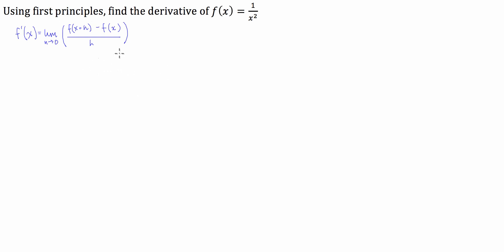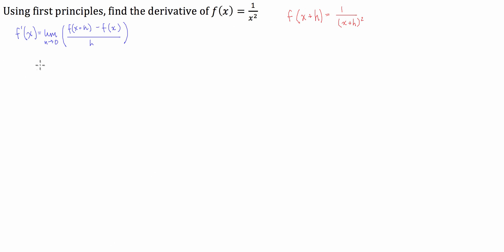To start with, we're going to enter our function in here. For those of you who are struggling with what to enter in: we have f of x equal to one over x squared, so f of x plus h is going to be equal to one over x plus h all squared. That's our f of x plus h. We've already got our f of x, so we can go about entering them into our definition of a derivative.